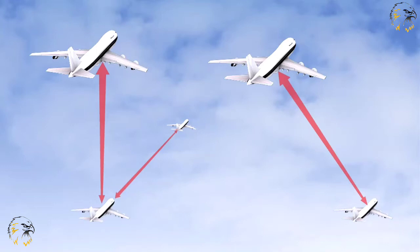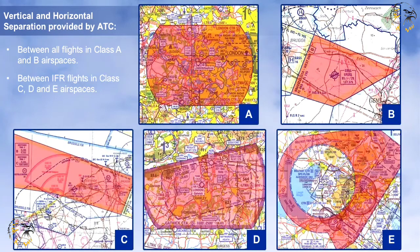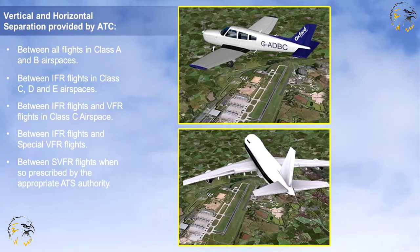To remind you again, vertical and horizontal separation is to be provided by ATC between all flights in Class A and B airspace, between IFR flights in Class C, D and E airspaces, between IFR and VFR flights in Class C airspace, between IFR flights and Special VFR flights, and between Special VFR flights when so prescribed by the appropriate ATS authority.